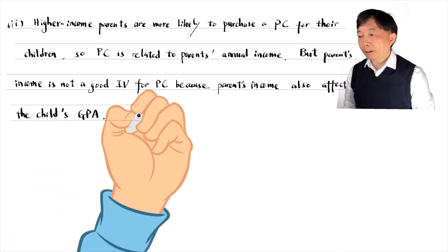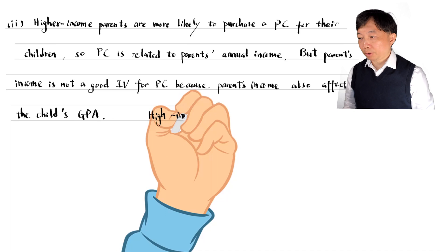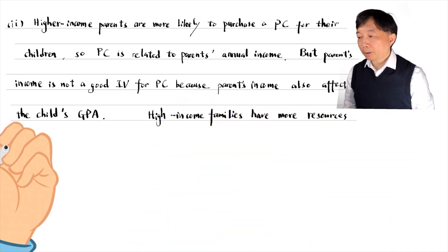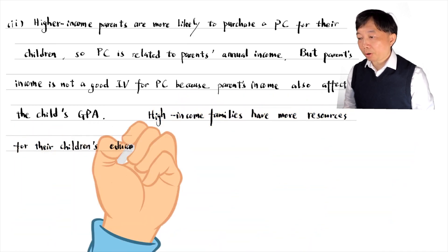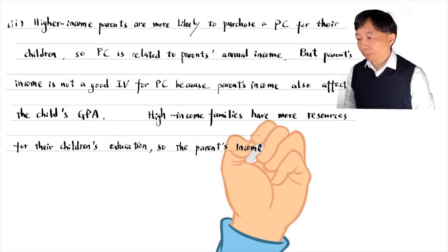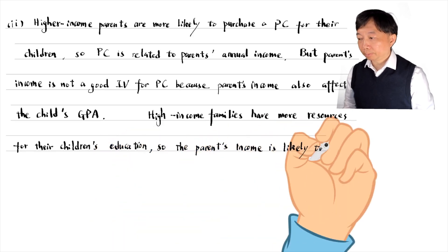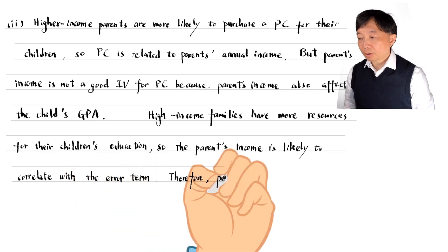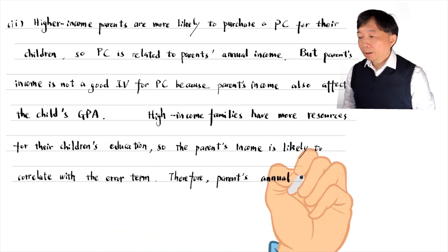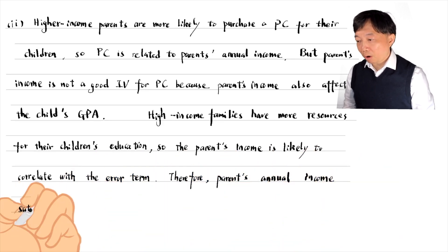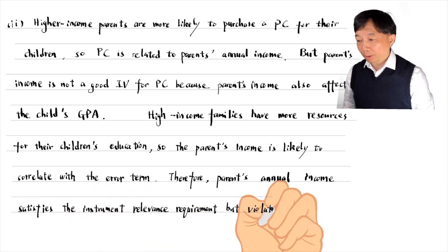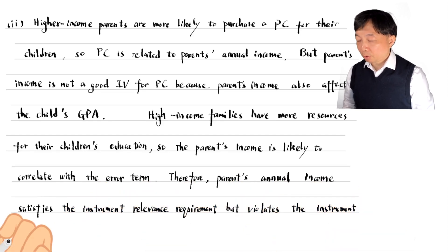High-income families have more resources for their children's education, so parents' income is likely to correlate with the error term in the model. Therefore, parents' annual income satisfies the instrument relevance requirement, but violates the instrument exogeneity requirement.